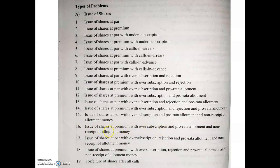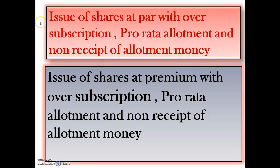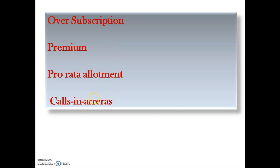Today's topic covers pro-rata allotment and non-receipt of allotment money. Non-receipt of allotment money means this is the case of calls-in-arrears. In our previous video, we solved one practical problem on issue of shares at par with over-subscription, pro-rata allotment, and non-receipt of allotment money. Today we are going to solve a practical problem on issue of shares at premium with over-subscription, pro-rata allotment, and non-receipt of allotment money.